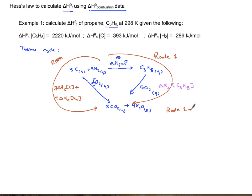Then after that it becomes algebra, respecting the coefficients. So for route number one I have delta H formation and delta H combustion of propane.